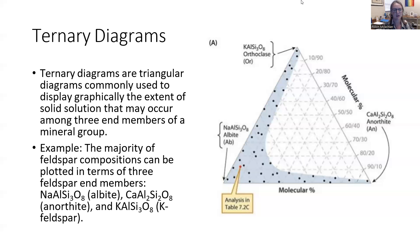But a lot of samples you get, it's not going to be 100% any one of these minerals. They might be a combination. We might have a little bit of albite, a little bit of anorthite, a lot of orthoclase or potassium feldspars.